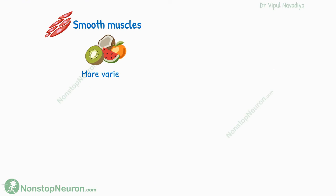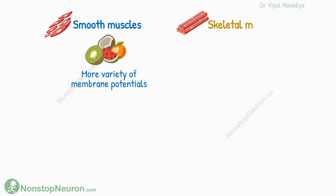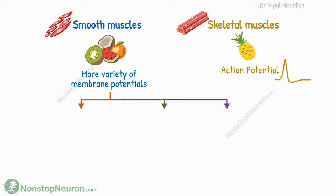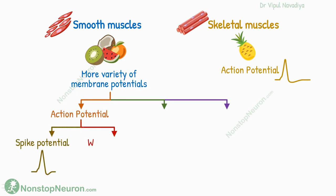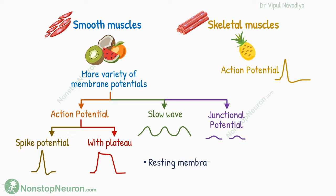Smooth muscles have more varieties of membrane potentials than skeletal muscles. The skeletal muscles contract only with action potentials, but the smooth muscles show diverse types of membrane potentials. These potentials include action potential, which can be spike potential or action potential with plateau, slow wave potential, and junctional potential. The resting membrane potential in smooth muscles is minus 50 to minus 60 millivolts.